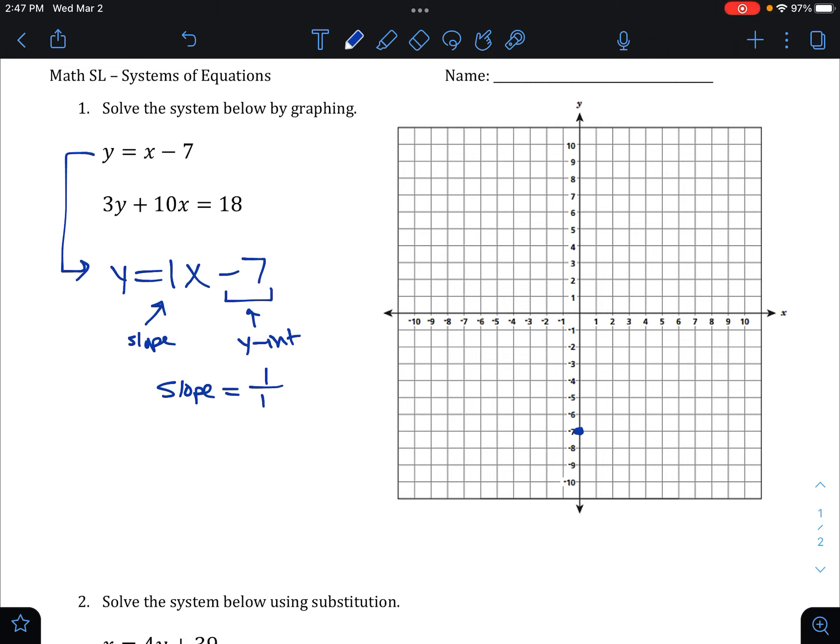And then we're going to use a ruler, in my case a line tool here, to connect these and line up our dots. Whenever you draw a line, go a little bit off the grid in both directions. Arrows on the end, because there's no reason not to. This is not a real-life problem that says that arrows wouldn't make sense. So we're going to use arrows on the ends. And then we're going to label this with the equation y equals x minus 7. That's our first line.